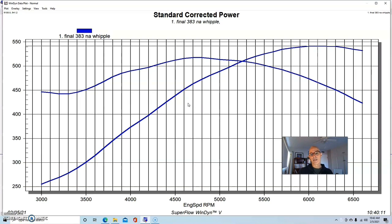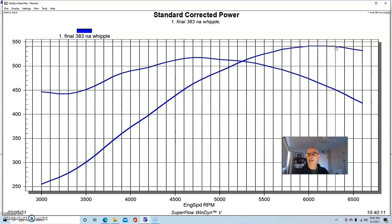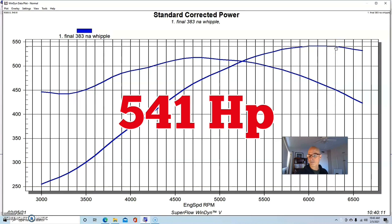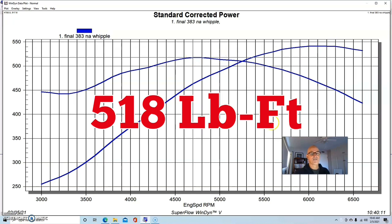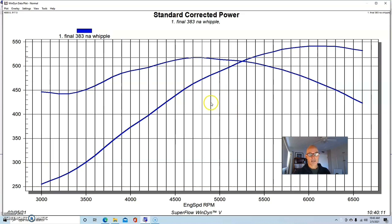The NA setup was run on 91 octane pump gas, but when we added boost we ran it on race gas. We dialed this thing in with the Holley HP management system with 83-pound injectors. We dialed in the air fuel and timing on this NA motor. It ran best at about 29 degrees of total timing with a curve built in, starting at 23 or 24 down low. After dialing everything in, this combination made 541 horsepower and peak torque checked in at 518 foot-pounds. It exceeded 500 foot-pounds from about 4200 out to 5500.